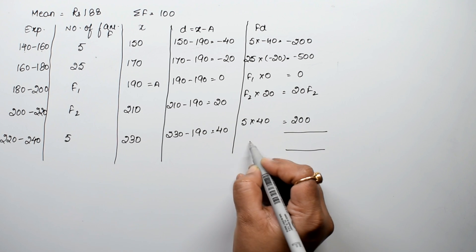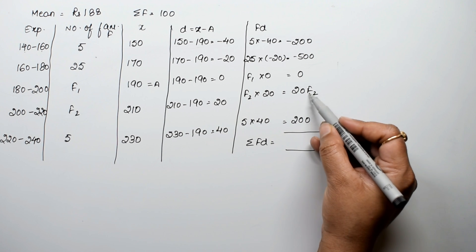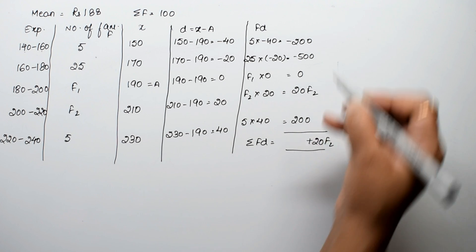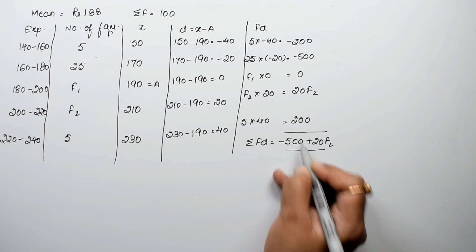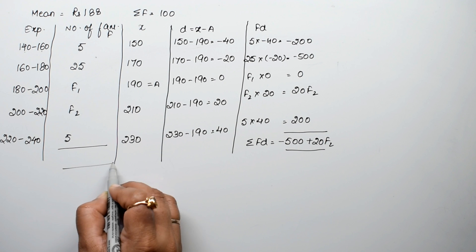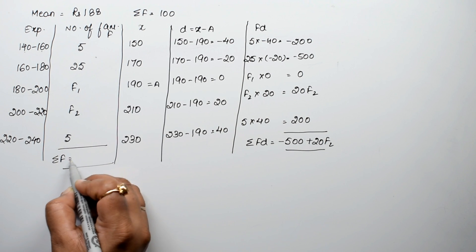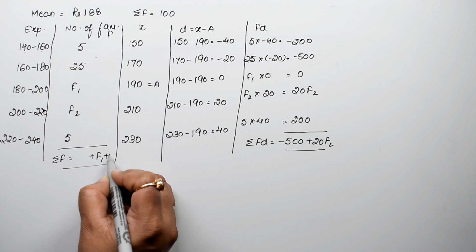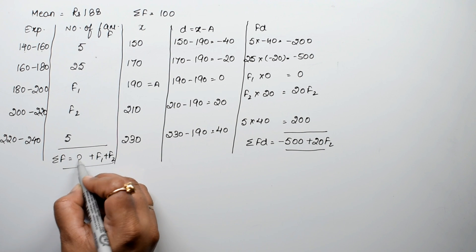The summation of fd equals minus 500 plus 20F2. The 200 plus and minus cancel out, giving us minus 500 directly. For summation F, which is already given as 100, we can also write it as 5 plus 25 plus F1 plus F2 plus 5, which equals 35 plus F1 plus F2.